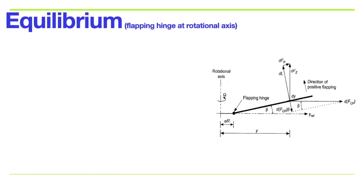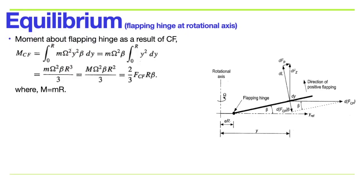Now for the equilibrium equation, we consider two cases. Case one: the flapping hinge is at the rotational axis. The moment about the flapping hinge at the rotational axis as a result of centrifugal force produced by all elements is M_cf = integral from 0 to R of m omega² y² beta dy. Integrating y² gives y³/3, so M_cf = m omega² beta R³/3, which equals uppercase M omega² beta R²/3. This gives the moment M_cf = (2/3) × F_cf × R × beta.